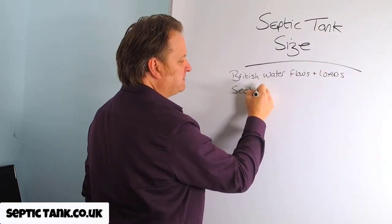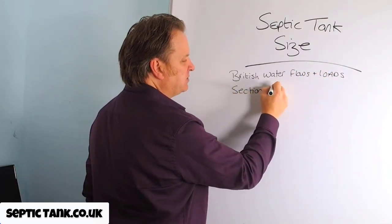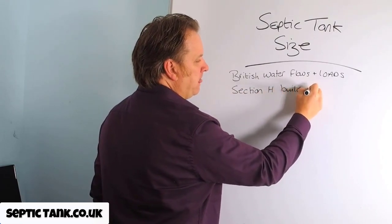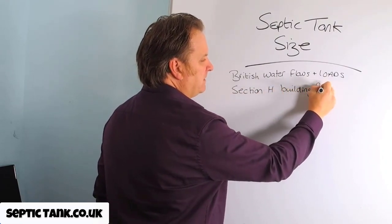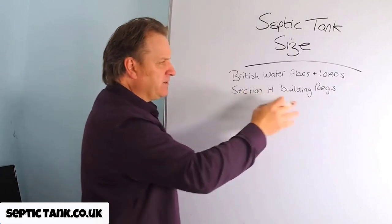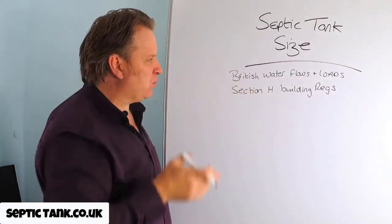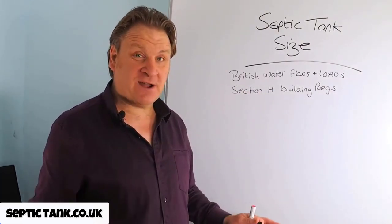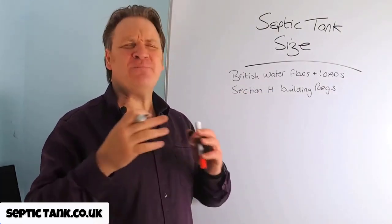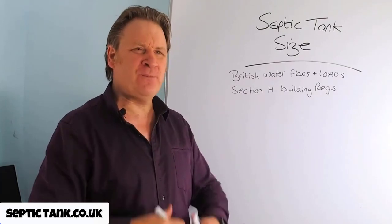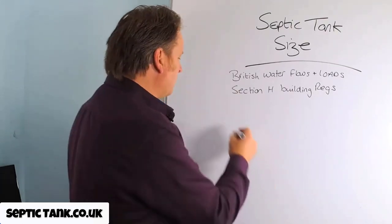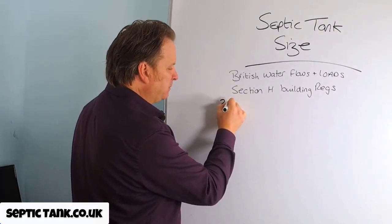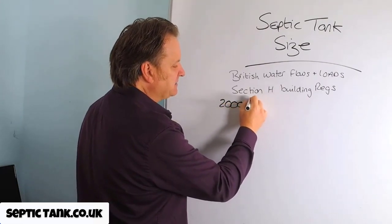Everything is based on British Water flows and loads, and secondly the figures are based on Section H of building regulations. In building regs and British Water, they state that before you even start — before even one bedroom or one person lives there — you've got to start with 2,000 litres.